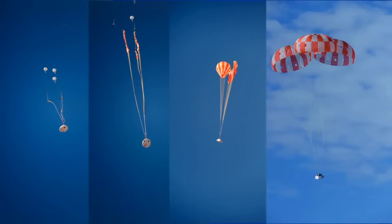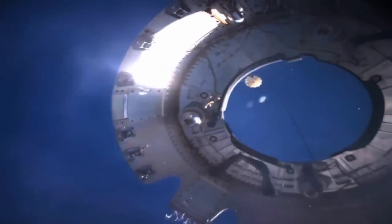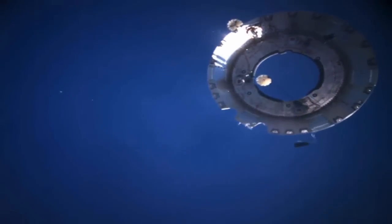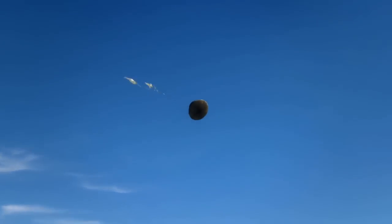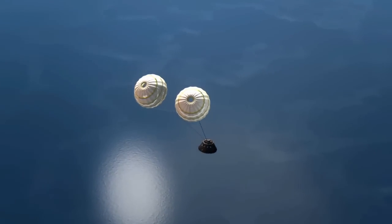Specially designed for Orion, the parachutes help us hit the brakes, but not too quickly. One day people will be aboard, so deceleration must happen in stages to keep things comfortable for the crew. The forward bay cover jettisoned. Two drogue chutes deployed and slowed the returning spacecraft down to 175 miles per hour.